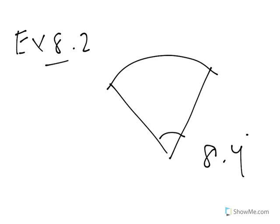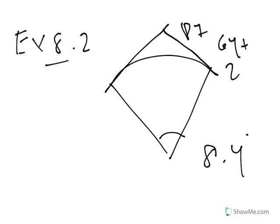In Exam 8.2, the point of intersection is the point of intersection. The point of intersection coordinates are 64.2 and 27.46.